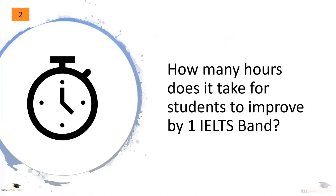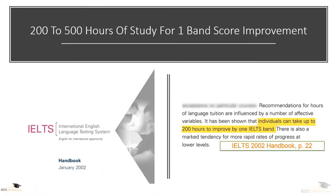The second thing I discovered is something that very few people, IELTS teachers included, actually know even till this day. This revelation is knowing how many hours it would take generally for students to improve by one IELTS band. I was looking for this piece of information and it was difficult to find, but one day I stumbled upon the answer. The 2002 IELTS handbook actually gives the answer — it says that students could take up to 200 hours of study to improve by one IELTS band.